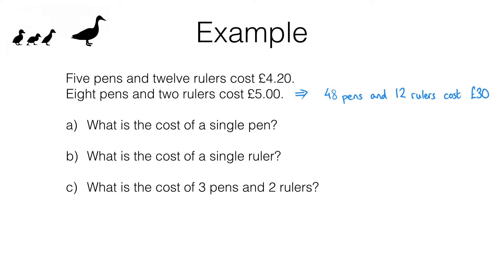How do I know this? Well all I'm doing is buying six lots of—six lots of eight pens and two rulers is 48 pens and 12 rulers, and that's going to cost me six lots of five pounds which is 30 pounds. Now why have I chosen to think about the cost of six lots of this? Well now the number of rulers I'm thinking of matches what I've got in this first line.